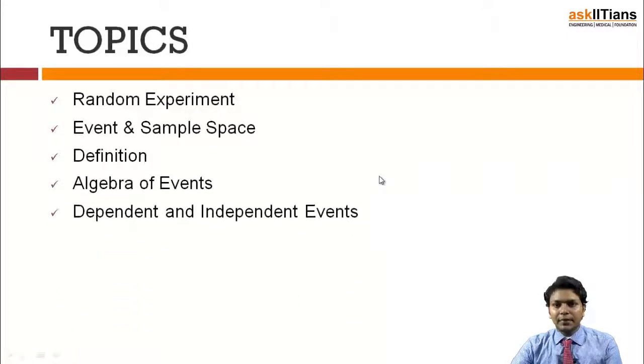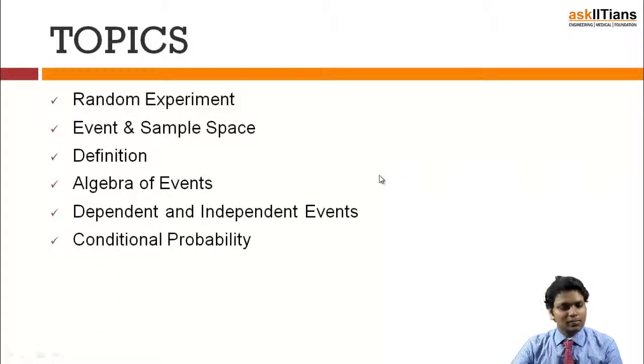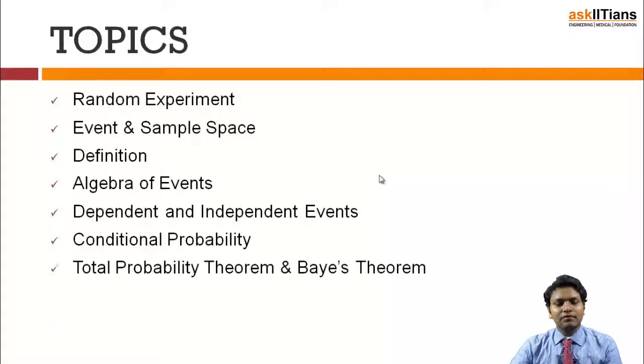After that we'll go for definition. After that we'll have algebra of events. Next to that will be dependent and independent events. After that I'll deal with conditional probability. After that we'll have total probability theorem and Bayes theorem, and will conclude this chapter with binomial trial and distribution.